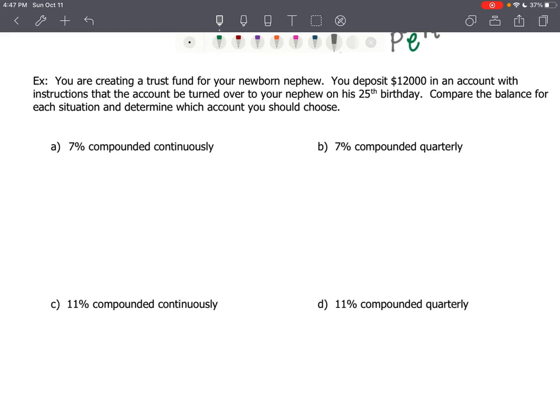7% compounded continuously. 7% compounded quarterly. 11% compounded continuously. Or 11% compounded quarterly. Well, we want to be able to justify which is the best account. So, we're going to do all of these calculations. What I'd like you to do is practice using those two formulas. Press pause and see if when you come back, if you were able to use those formulas properly.